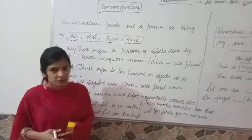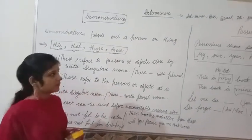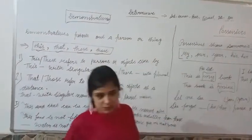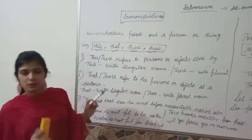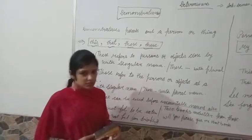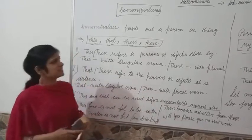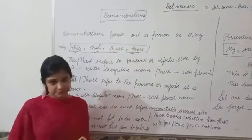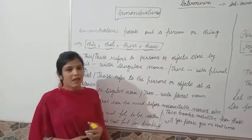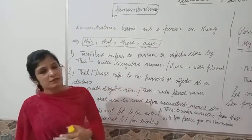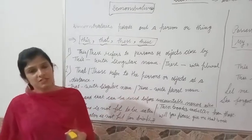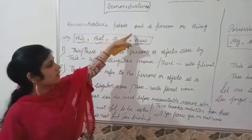There are six types of determiners: articles, demonstrative, possessive, quantifier, interrogative, and distributive. We have completed one determiner, that is article. Article we have completed in the previous videos.